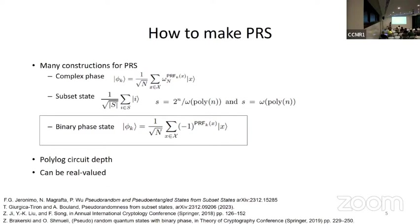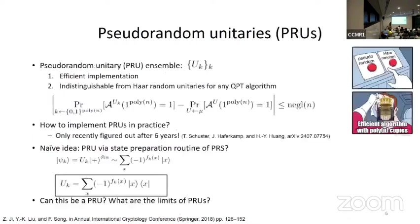The nice feature is that these states can be prepared in polylogarithmic depth — the circuit depth is only polylog. This is quite amazing because Haar-random states take exponential depth. So we get a doubly exponential advantage in circuit depth. We can generate what looks Haar-random in extremely short depth. Secondly, it's interesting to note — and this will come up later — that this construction is real-valued. There are no complex numbers here, just plus and minus signs. So in particular, there are no complex amplitudes at all, even though quantum mechanics generally involves complex numbers.